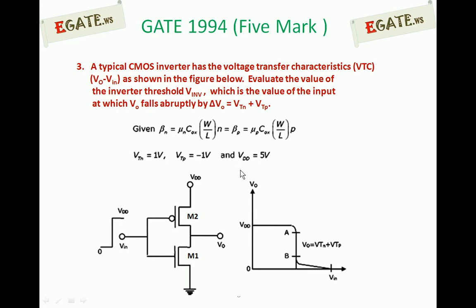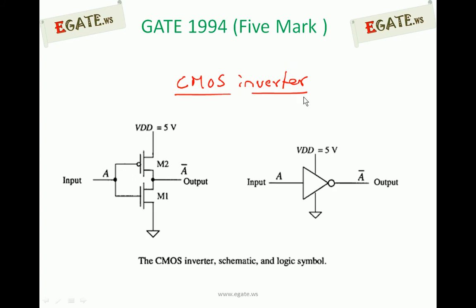For the given CMOS inverter diagram, we need to calculate the inverter threshold. The CMOS inverter consists of two transistors: M1 is the NMOS transistor and M2 is the PMOS transistor. The bubble in the symbol signifies the PMOS, and no bubble means NMOS. The inverter gives inversion of the input — if input is A, output is A-bar.